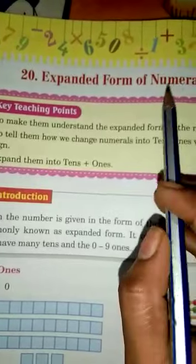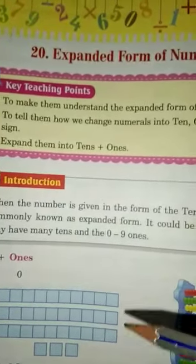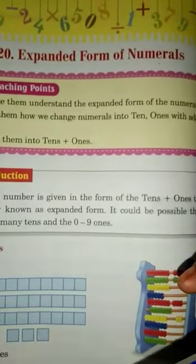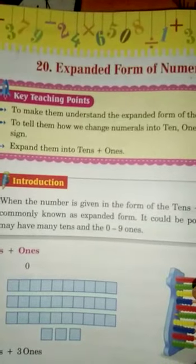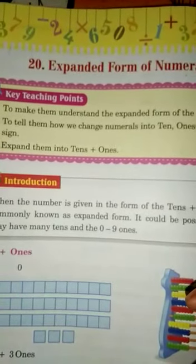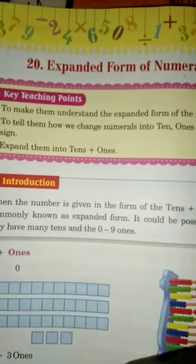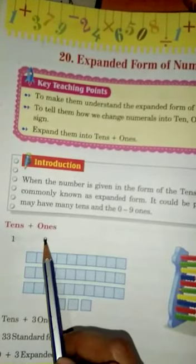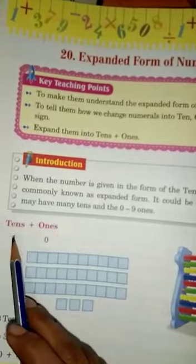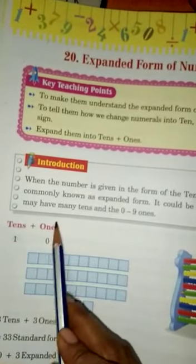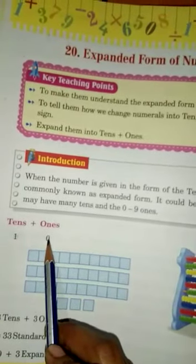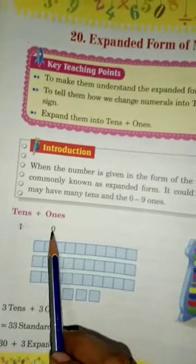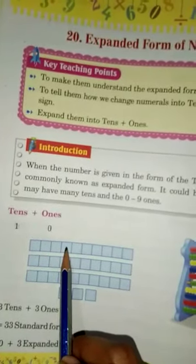Now tell me, do you know what is expanded form? When a number is given in the form of tens plus ones, that is commonly known as expanded form. So here, what is in the tens place? One. And in ones place? Zero. So in tens place: one, and in ones place: zero. In standard form, that is ten.